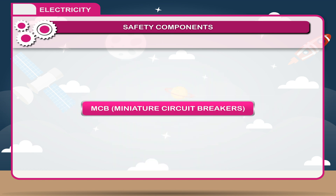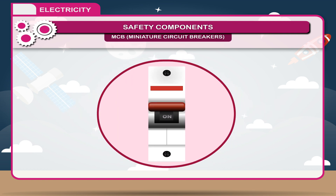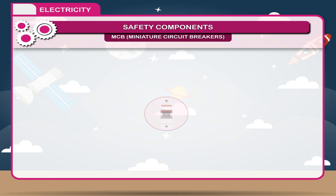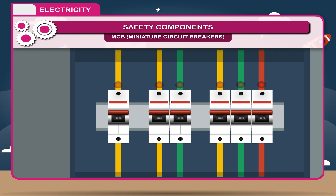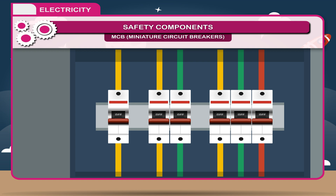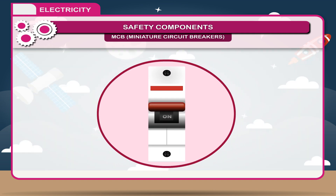MCB — Miniature Circuit Breakers: Nowadays, instead of fuses, miniature circuit breakers (MCBs) are used for each individual circuit. If due to short-circuiting a heavy current flows in the line, the MCB trips to switch off the circuit in a very short time. The MCB is then raised again after repairing the fault. The use of MCB is easier than a fuse because it avoids the inconvenience of replacing a fuse wire and is much safer due to its quick response.